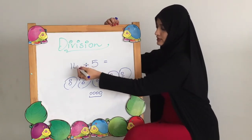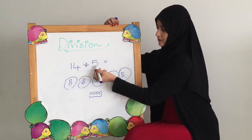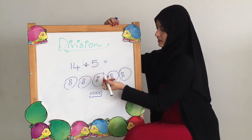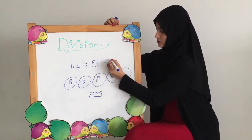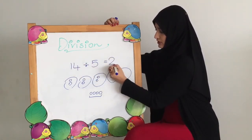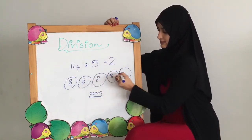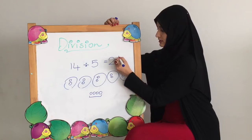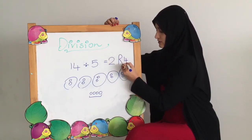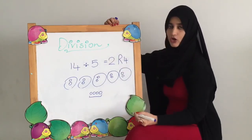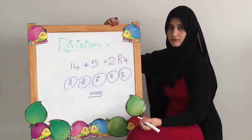14 divided by 5. The answer is 2. Each set has 2. The remainder is 4 balls or 4 objects.